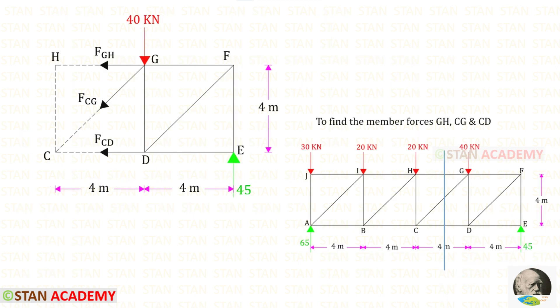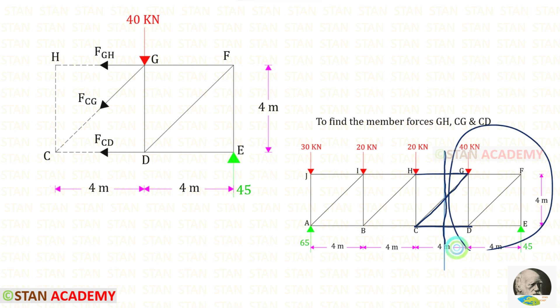We need to find the member forces GH, CG, and CD. To find these three, we have to make a section like this so that all three are cut. We can take either the left side or the right side — let us take the right side, as it will be easier.